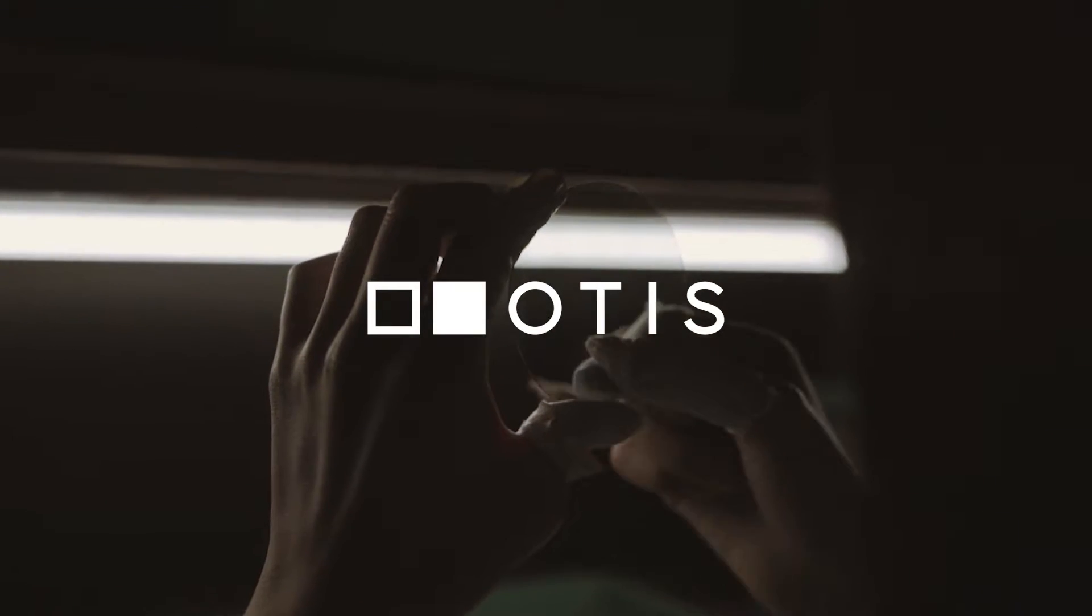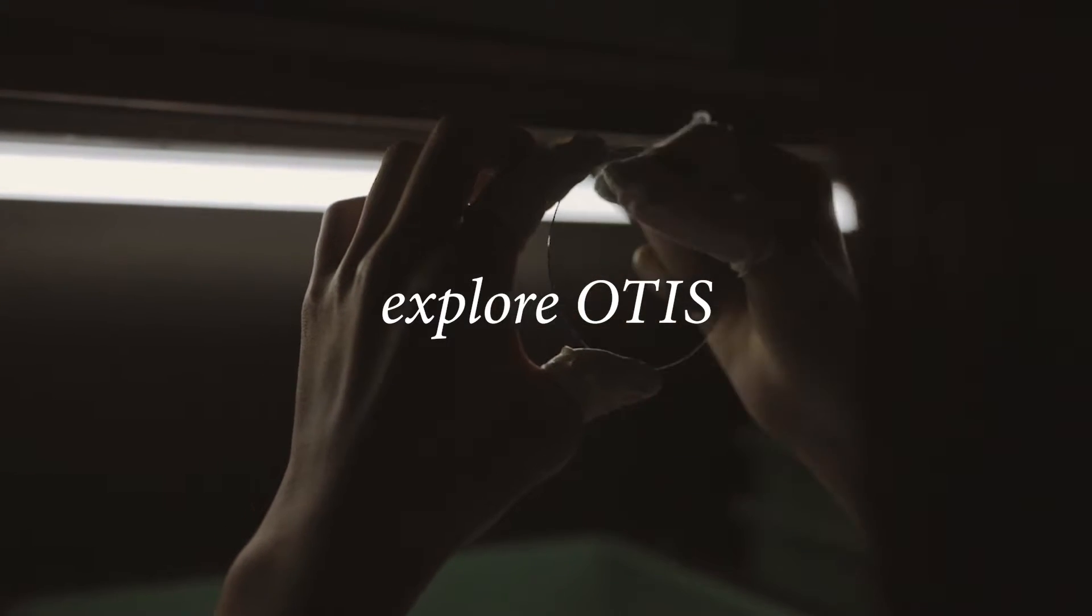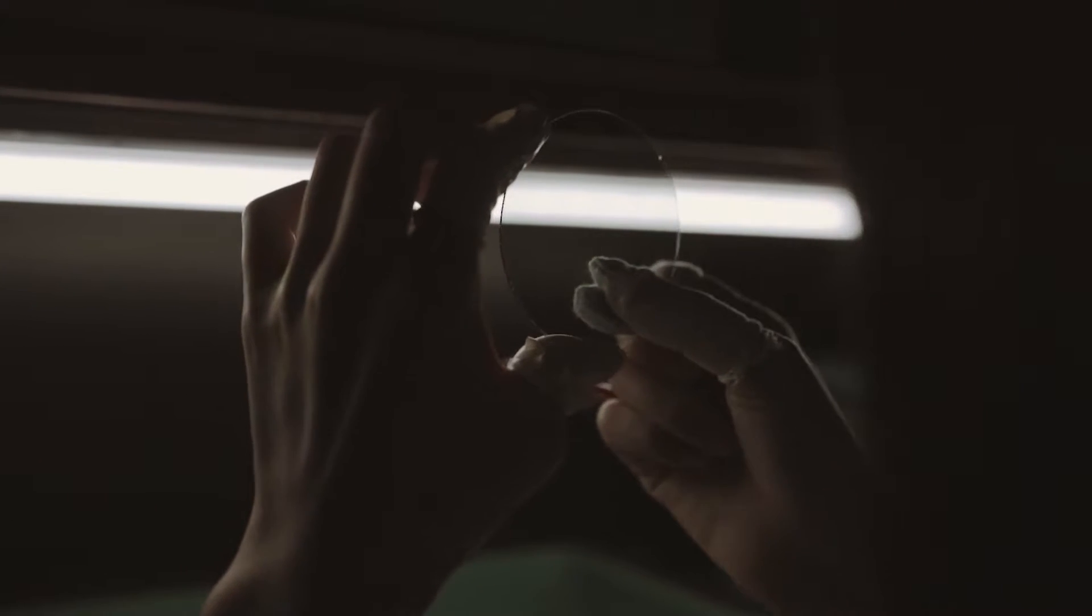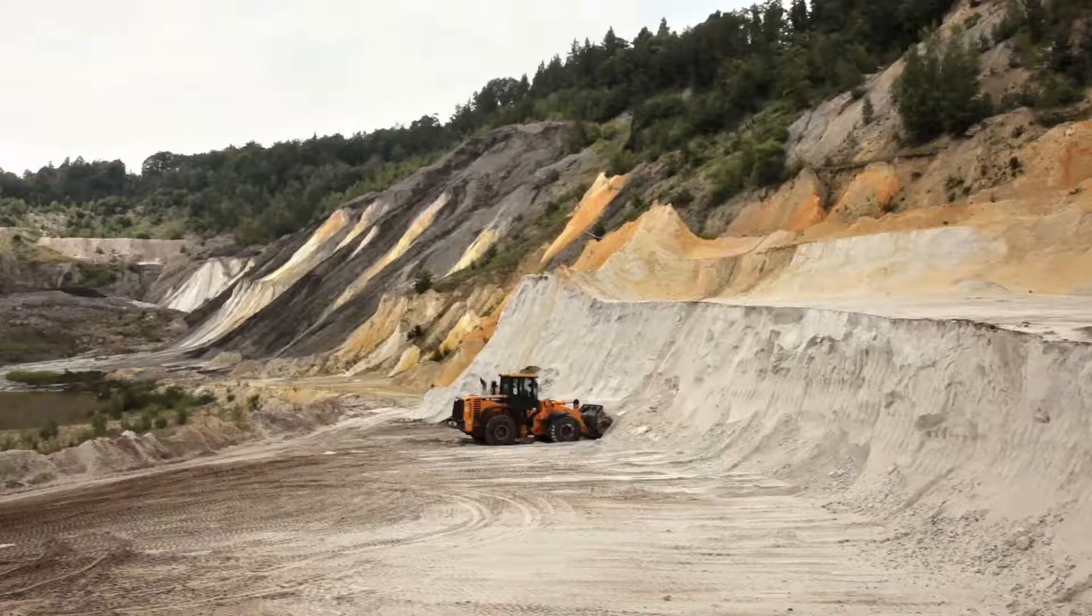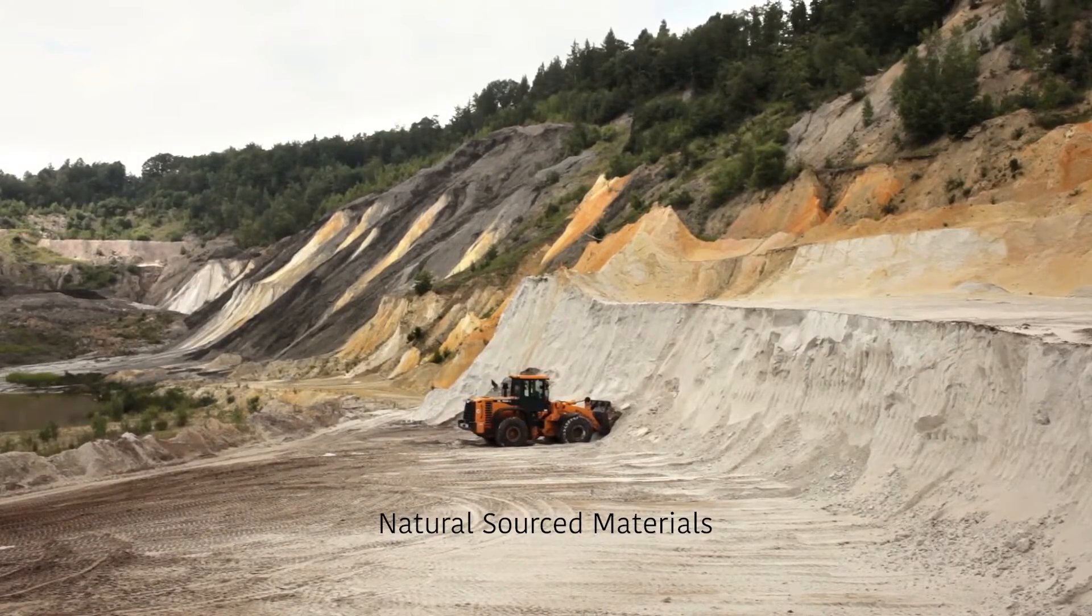Since Otis was founded nearly two decades ago, they've been using nothing but 100% mineral glass lenses in every piece of eyewear made. But what is mineral glass? Why is it so special? And how is it made? Let us explain.